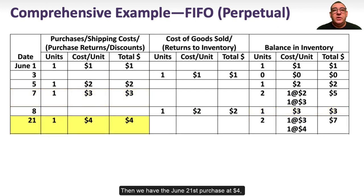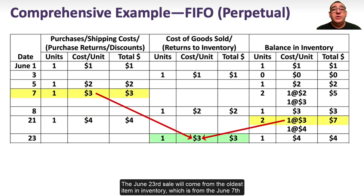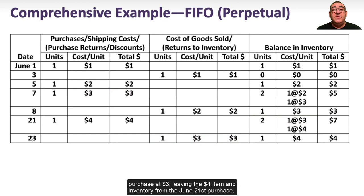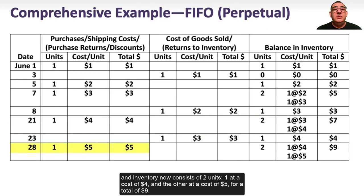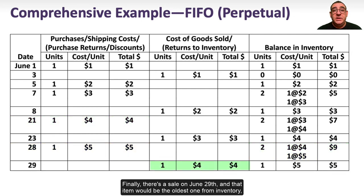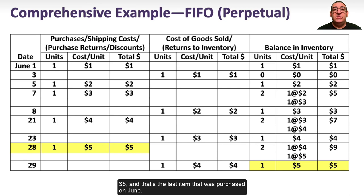Then we have the June 21st purchase at $4, leaving two units in inventory at $3 and $4 for a total of $7. The June 23rd sale will come from the oldest item in inventory — from the June 7th purchase at $3 — leaving the $4 item in inventory from June 21st. Then there is a purchase on June 28th at $5, and inventory now consists of two units at $4 and $5 for a total of $9. Finally, the June 29th sale would be the oldest item from inventory — the June 21st purchase at $4 — leaving one unit in stock at a cost of $5, the last item purchased on June 28th.